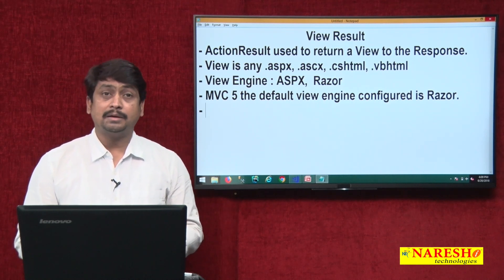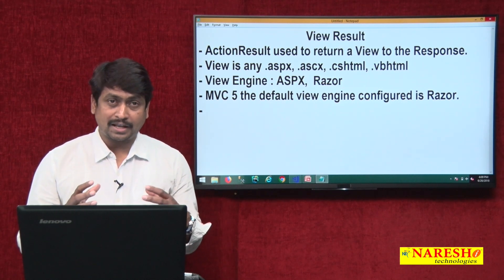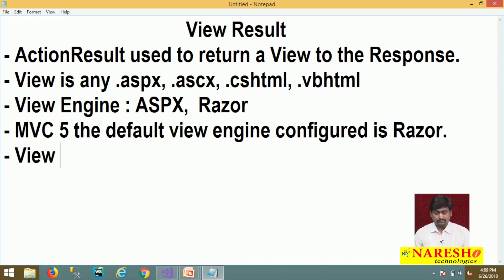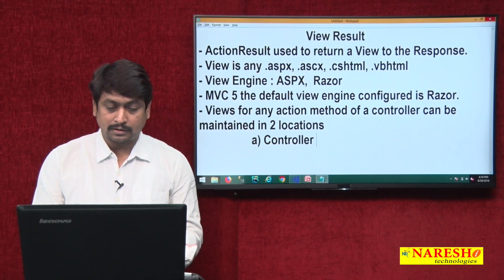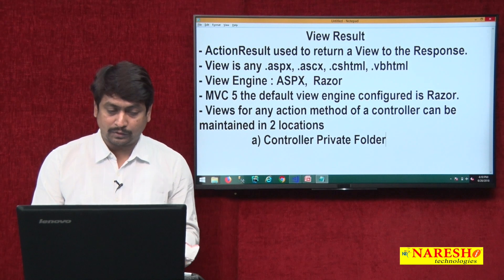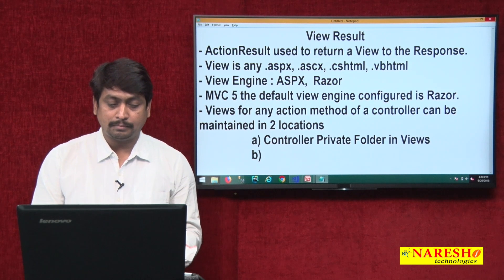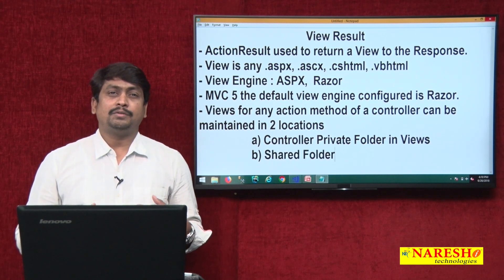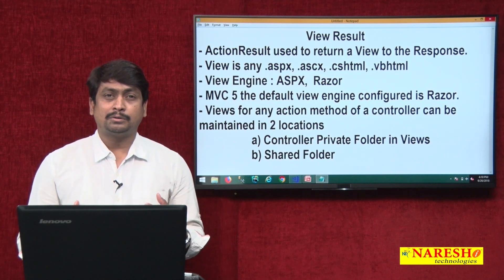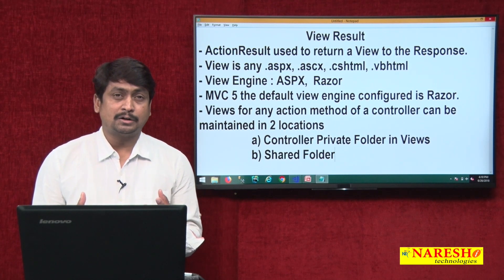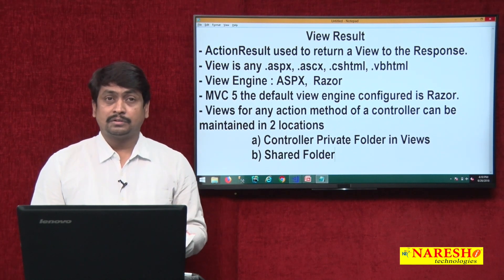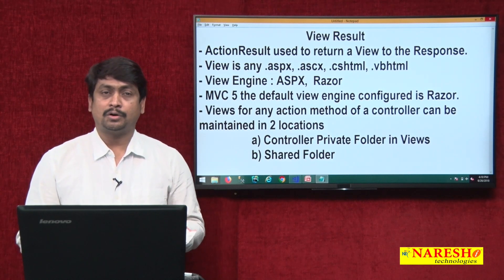By default in MVC 5, the view engine enabled is the Razor engine. Any action method of a controller can have its views maintained in two locations: one is the controller's own private folder inside the Views directory, and another is a shared folder. If you maintain a view in the shared folder, it can be made available across any controller action. Anything in the shared folder is accessible everywhere; if it is in the private folder of a controller, it is accessible only to that particular controller.